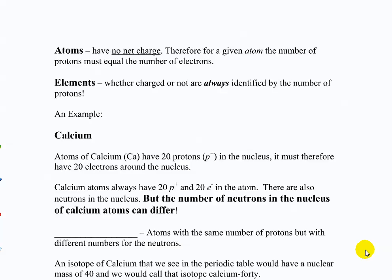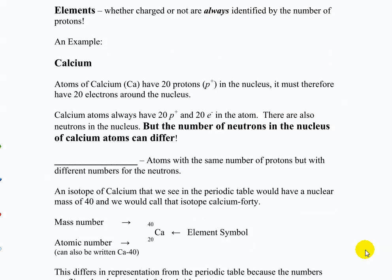Protons, neutrons, and electrons are the same in every atom, but their collections make different atoms different. An atom overall will never have a net charge, which means the electrons and protons need to be in numerical balance. Elements, whether charged or not, are always identified by the number of protons. Calcium has 20 protons - we look on the periodic table and see it's element number 20. A calcium atom must also have 20 electrons to balance the charge. The number of neutrons can differ without affecting charge because neutrons have no charge.